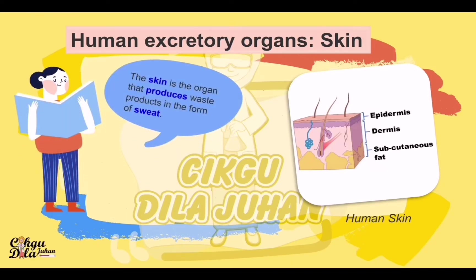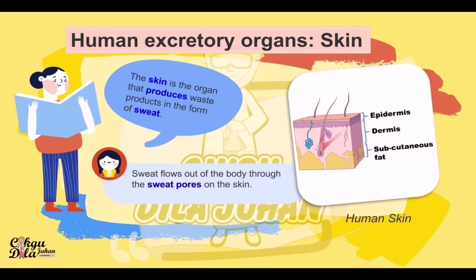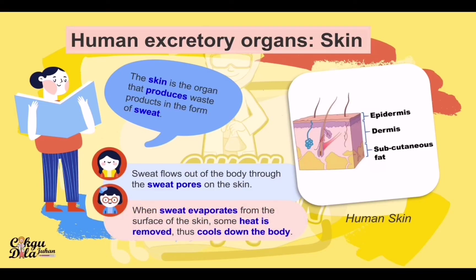The skin is the organ that produces waste products in the form of sweat. Sweat flows out of the body and evaporates from the surface of the skin, removing some heat and thus cooling down the body. That is why when we are in a hot place, we start sweating — the function is to cool down your body temperature.